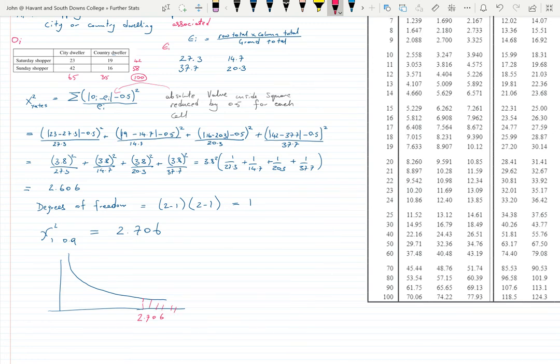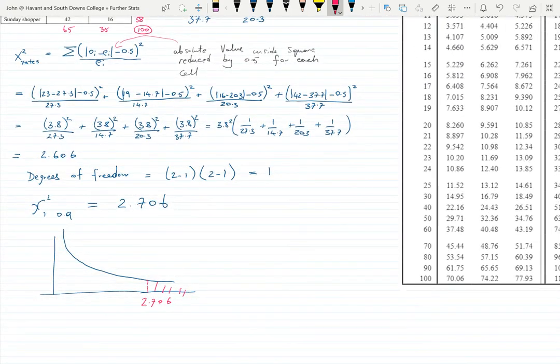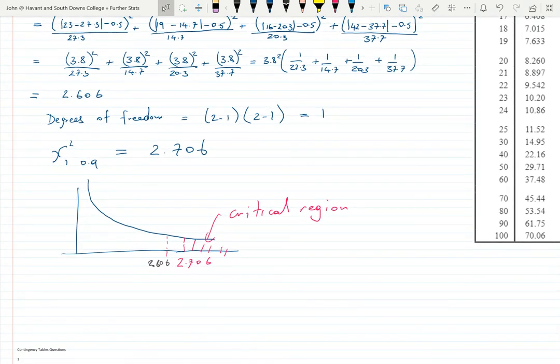But we've got a value of 2.606. Coincidentally they seem kind of similar numbers but it's just pure coincidence. This is the critical region - those are the values for which we would reject H0. So we do not reject H0.